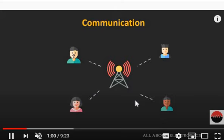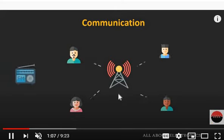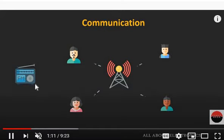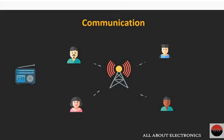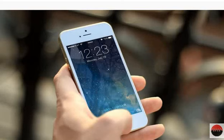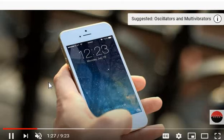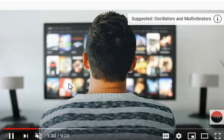Here we can see point-to-point communication and point-to-multipoint communication. The broadcasting station is sending signal or information to various people — an example is an FM transmitter. We can also transfer messages or information through the mobile, which is also a communication system. Watching television is another example of a communication system.